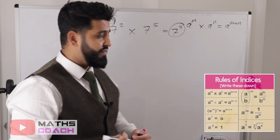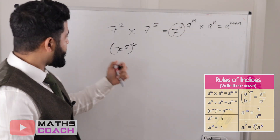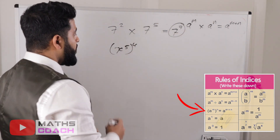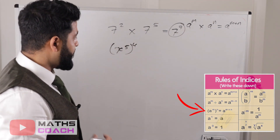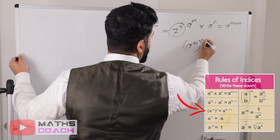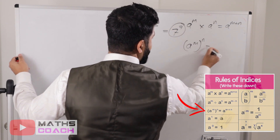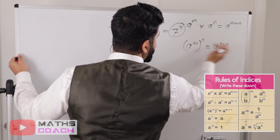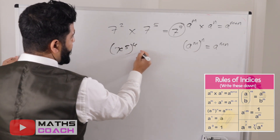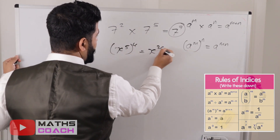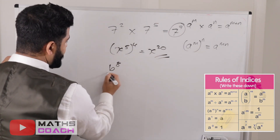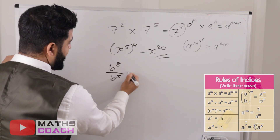Next, x to the power of 5, to the power of 4. We saw that if you have a to the power of m with a power outside, you simply multiply the two powers. So here we do 5 times 4, giving us x to the power of 20. Next, b to the power of 8 divided by b to the power of 5.